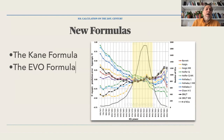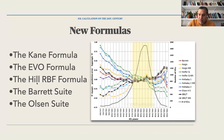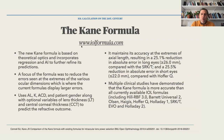Let's talk about new formulas. I want to cover five: the Kane formula, the EVO formula, the Hill RBF formula, the Barrett Suite, and the Olsen Suite. I have the most experience with the last two, so I'll focus on those. Here's a graph showing that between normalized eyes, all formulas perform equally well — the issue is again with extreme eyes.